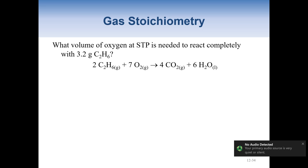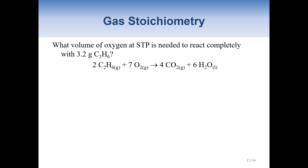Go ahead and try to solve this one — pause the video and then we'll work through it together. What volume of oxygen, in liters at STP — that's just informational — is needed to react completely with 3.2 grams of C2H6? So we're going from grams of C2H6 to liters of O2.